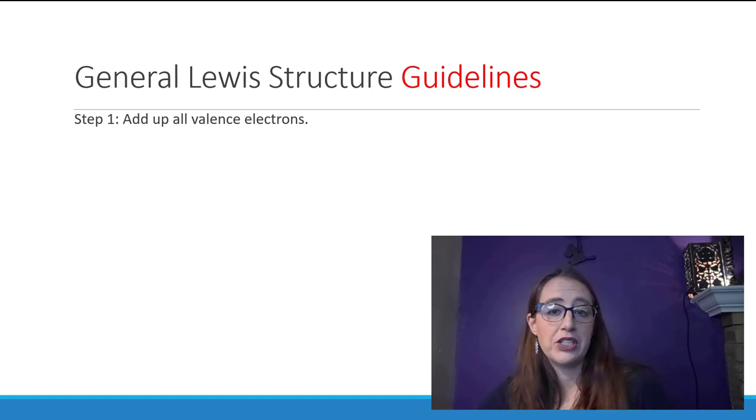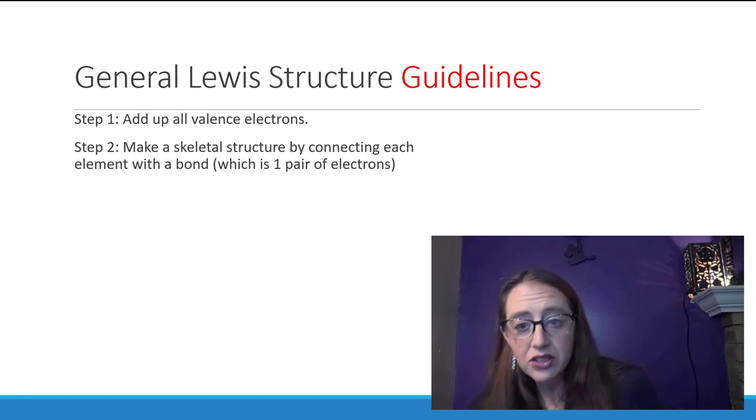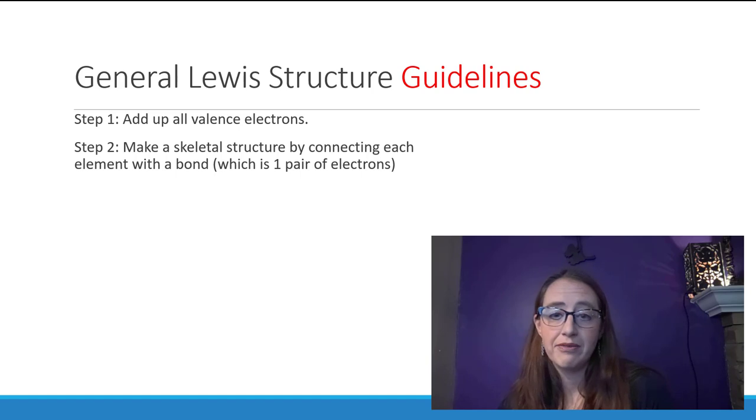From here, you want to draw out a skeletal structure. This means setting up each atom separated by a single bond. Your least electronegative element, normally the one written first, is going to go in the center. From here, you'll know how many electrons you have left. Distribute these among each of the atoms.